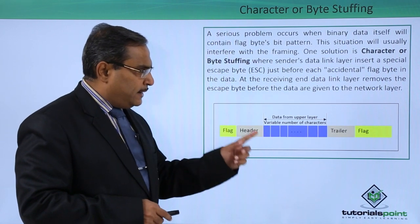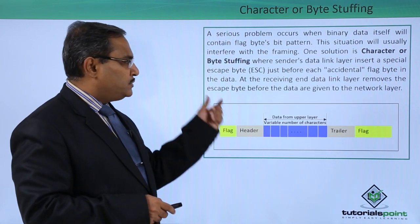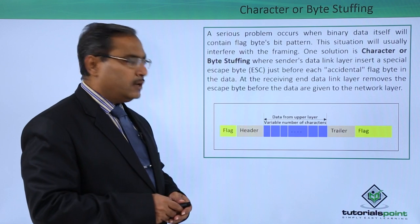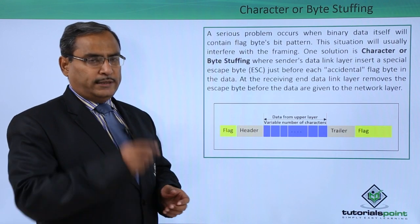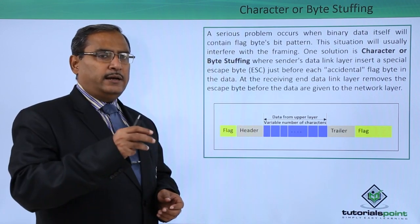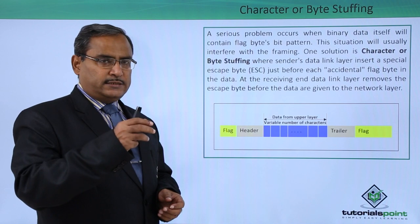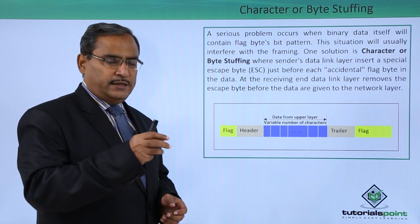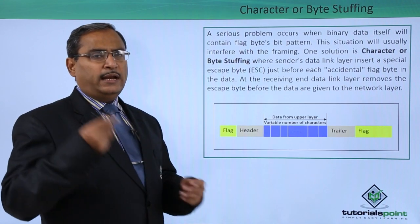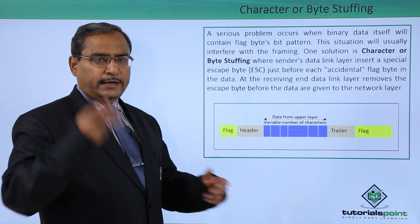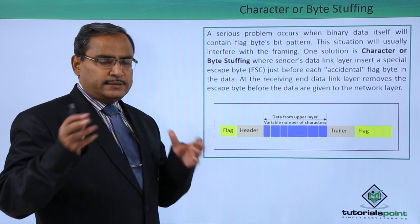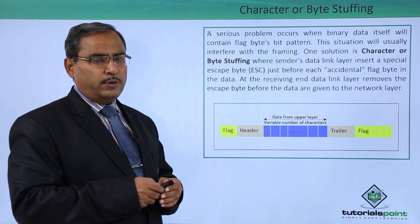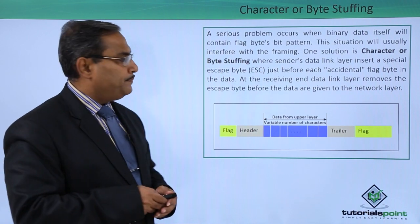At the receiving end, the data link layer removes the escape byte before the data are given to the network layer. Those extra escape characters that were stuffed into the frame are taken out before the data link layer at the receiving end sends the frame to the network layer, that is, the upper layer.